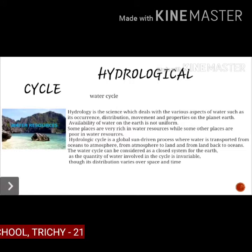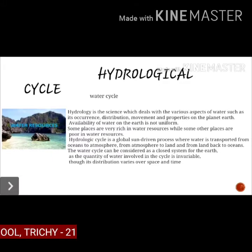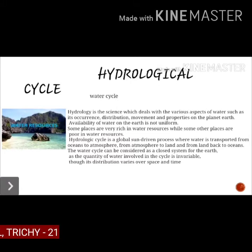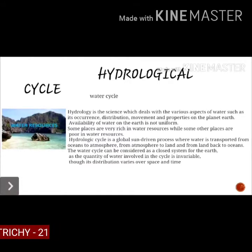The hydrological cycle is a global sun-driven process where water is transported from the ocean to the atmosphere, from the atmosphere to land, and from land back to the ocean. The quantity of water involved in the cycle is invariable, though its distribution varies over space and time.